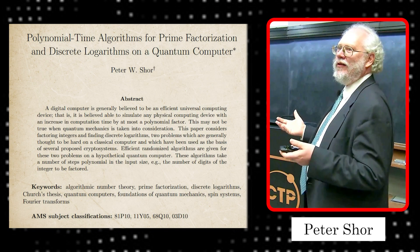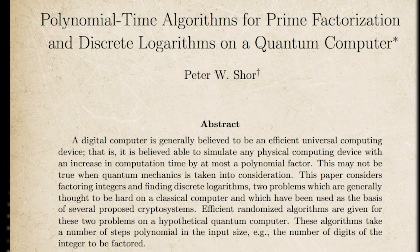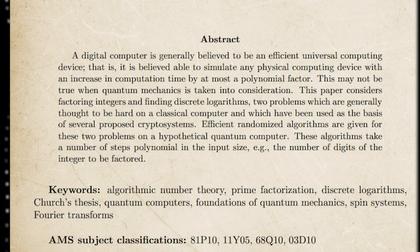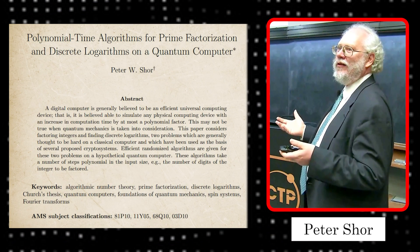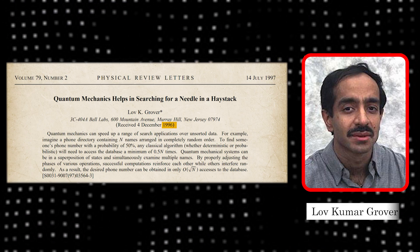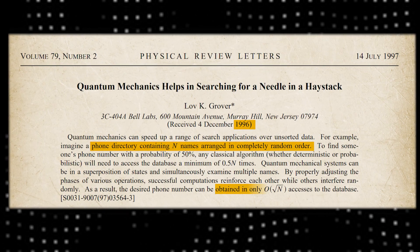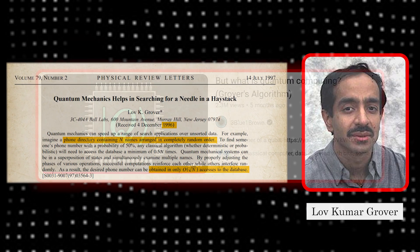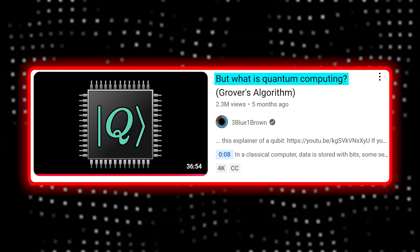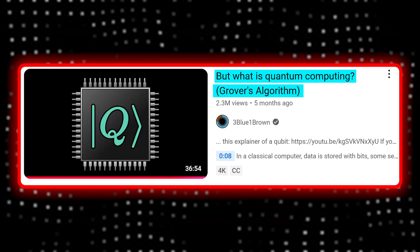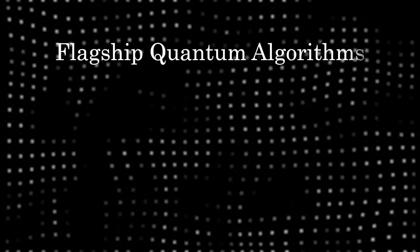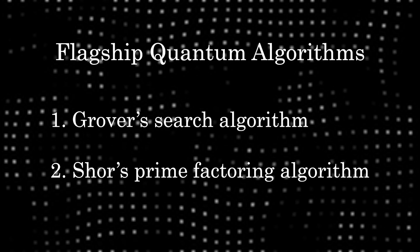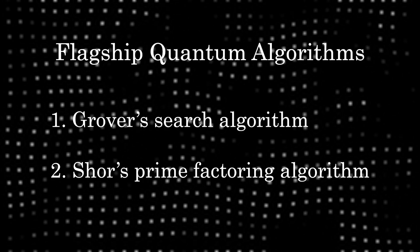But in the 1990s, Shor showed that quantum computers can factor large numbers efficiently. This means one could break RSA encryption — the backbone of our digital security. Around the same time, Grover's algorithm offered a quantum speedup for searching through data, which has huge practical applications. Together, this proved that quantum computers can truly outperform classical ones for some special problems that can be useful in our daily life.